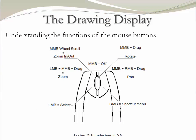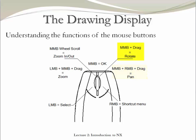An alternative way to modify the display in NX is by using the mouse. To select, use the left button. To access any shortcut, use the right button. To zoom in and out, simply roll the wheel. To zoom, use the left and middle buttons at the same time and drag. To pan, use the right and middle buttons at the same time and drag. To rotate, use the middle button and drag. Make sure that you practice these movements so you are more comfortable when displaying things in NX.